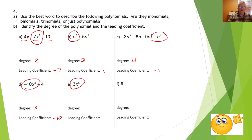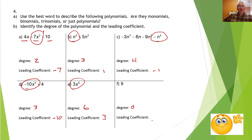There's only one term here: degree 6, coefficient 3. Here's a constant — the degree is 0 and the number itself is the leading coefficient. The term is just a number. That's all we have. That was a quick introduction to some vocabulary we use with polynomials. Good luck.